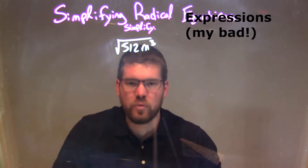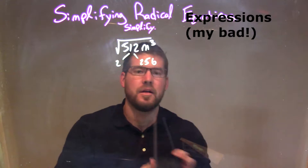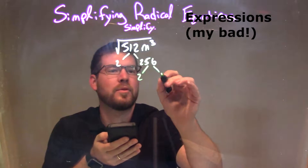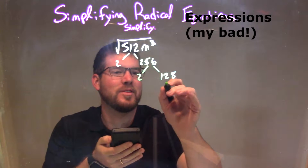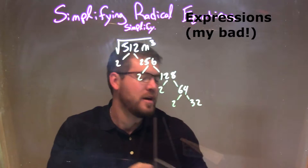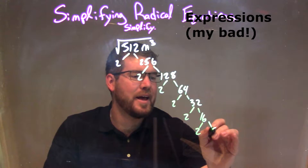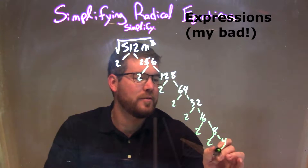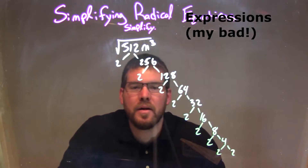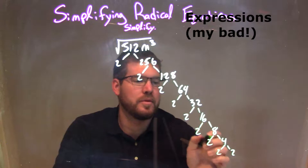I need to break down 512, so I'll do my prime factorization of that. 512 is 2 times 256. 256 is 2 times 128. And if you know your computers, this is easy. 128 is 2 and 64. 64 is 2 and 32. 32 is 2 and 16. 16 is 2 and 8. 8 is 2 and 4. And 4 is 2 and 2. So I broke 512 down to all the prime numbers, which multiply together to get 512: 2 times 2 times 2 times 2 times 2 times 2 times 2 times 2.